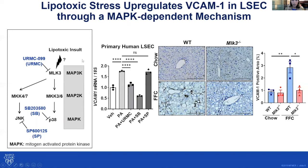Next, we identified the signaling pathway responsible for VCAM1 upregulation during lipotoxicity in NASH. We employed the saturated free fatty acid palmitate to induce lipotoxicity and showed that pharmacological inhibition of the MAP3 kinase MLK3 or the MAP kinase P38 resulted in reduced lipotoxicity-induced VCAM1 upregulation in primary human LSECs under prolipotoxic treatment. Furthermore, we showed that MLK3 knockout mice had reduced VCAM1 expression when fed the FFC diet compared to wild-type mice. These findings indicate that VCAM1 is upregulated in LSECs under lipotoxic conditions and during NASH via a MAP kinase pathway.